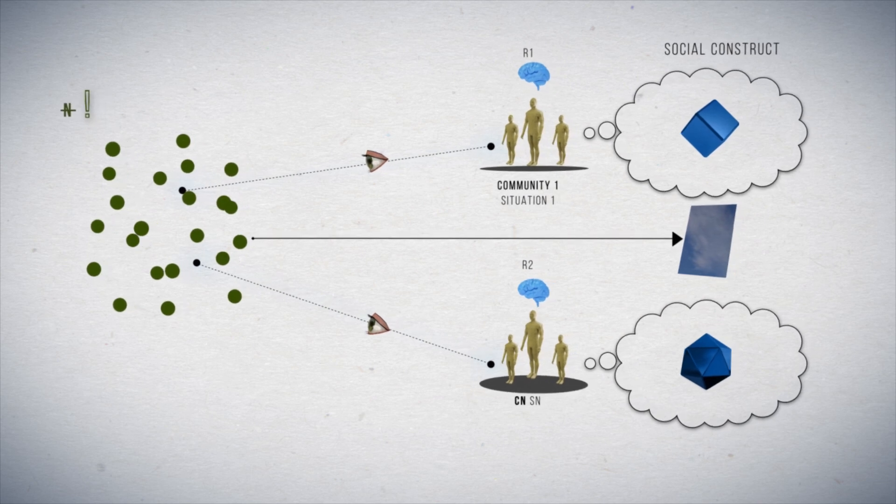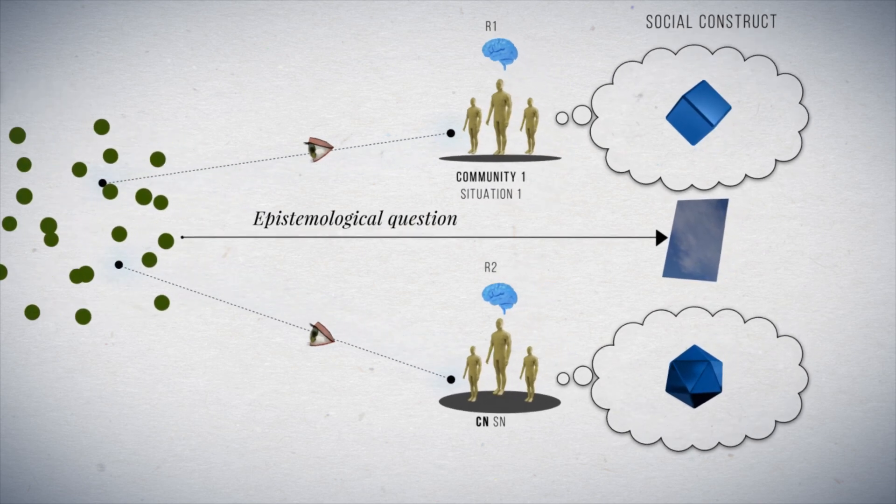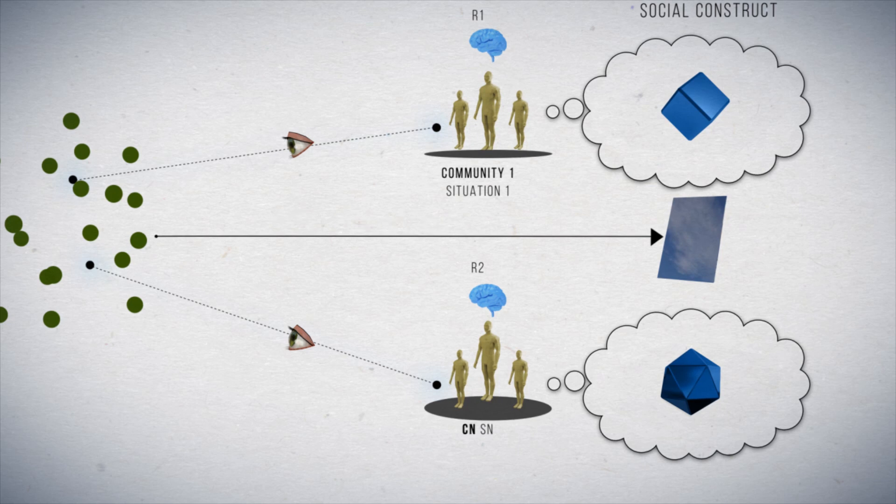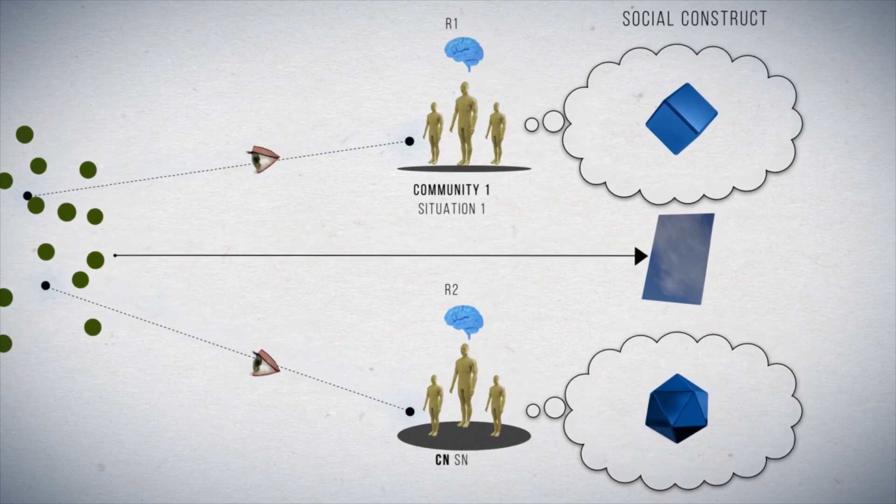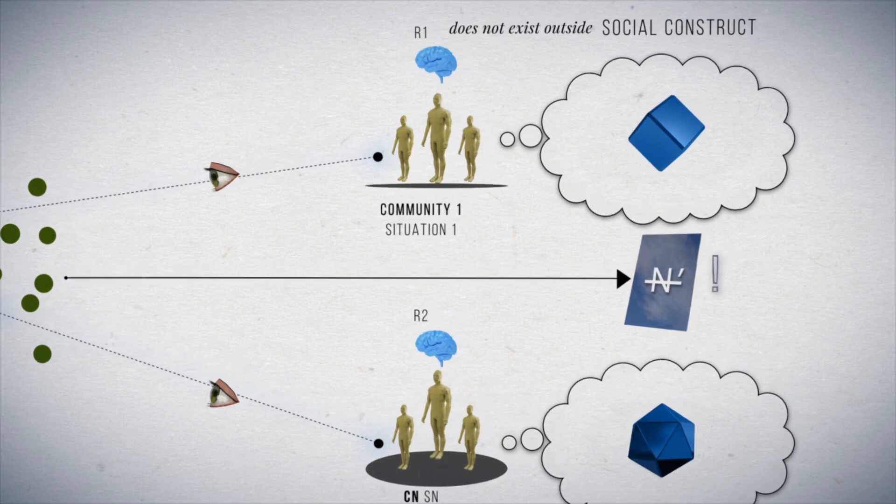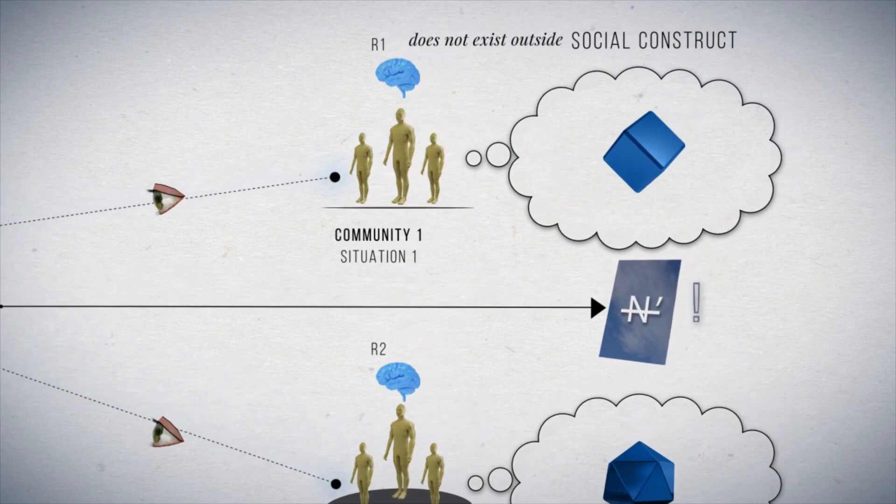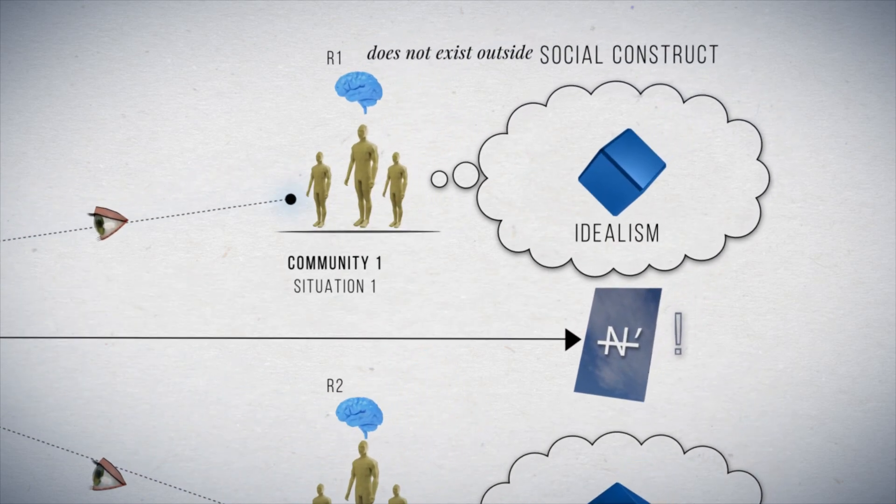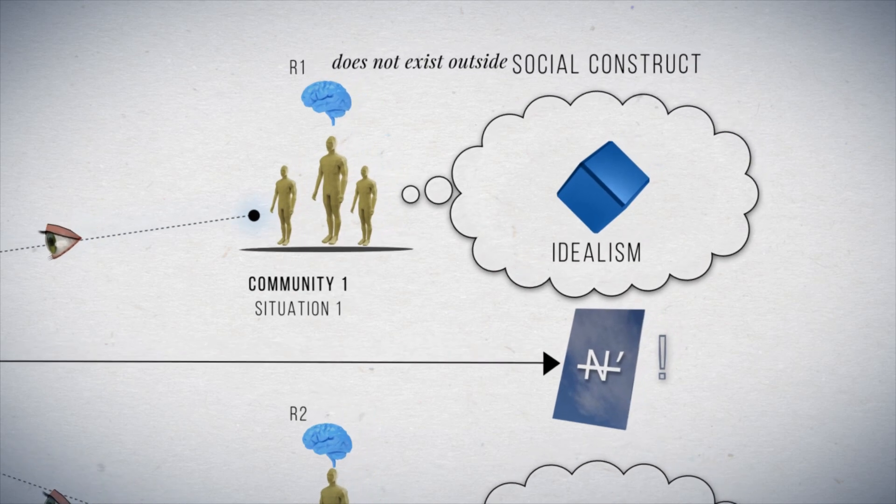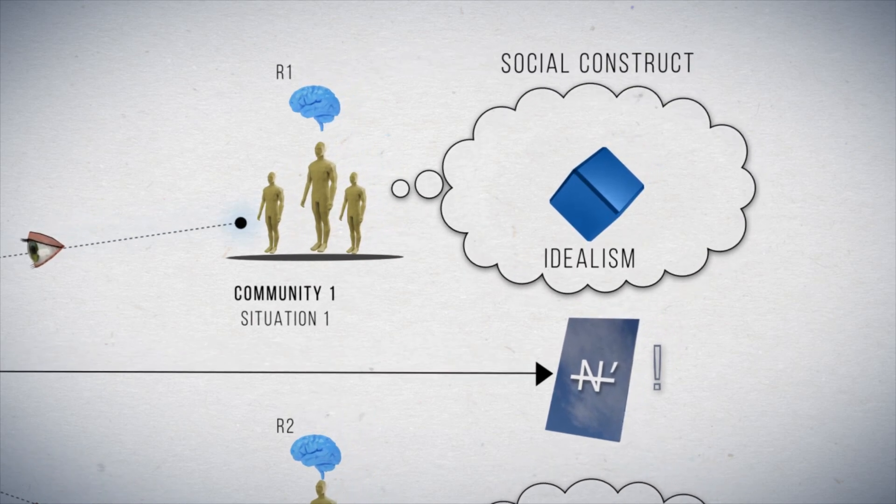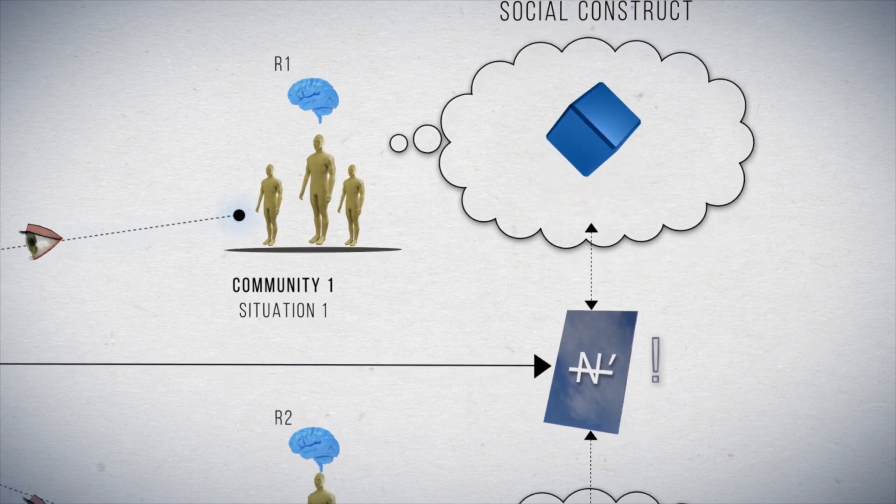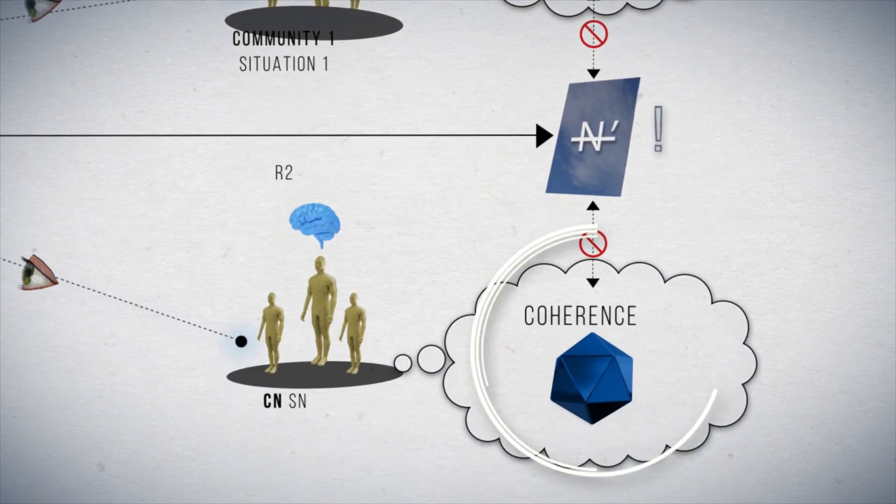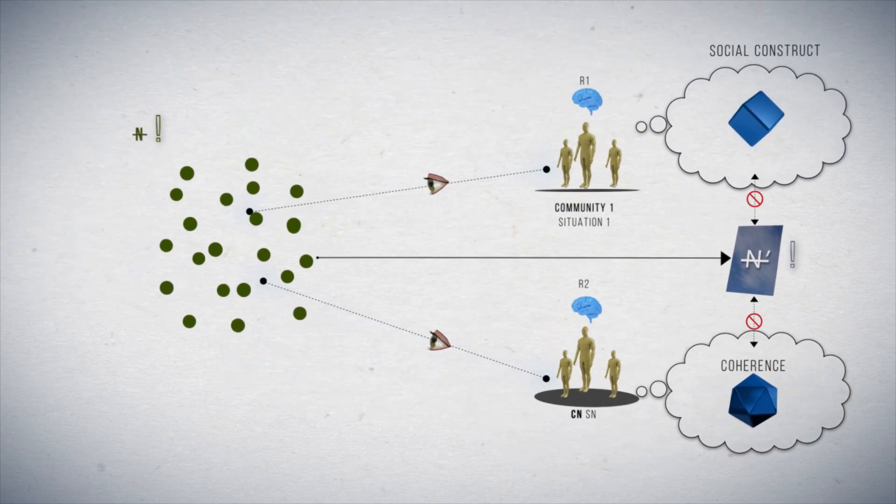Consequently, the answer to the epistemological question of the natural sciences was that it was not possible to know what nature is, since nature does not exist outside social constructs, a typically idealistic answer. Thus, methodologically, no social construct would have to go through an external validation because this would not be possible. It would only need to be internally coherent.